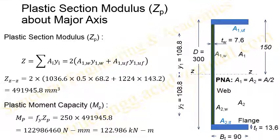Because of symmetry, the same values of area and centroid distance y1 are available on the lower side as well. The first moment of area calculated on the upper side is simply repeated for the lower side. Therefore, when calculating the plastic section modulus Zp, we multiply each area by its centroid distance from the PNA and then multiply the total by two to incorporate the lower side.